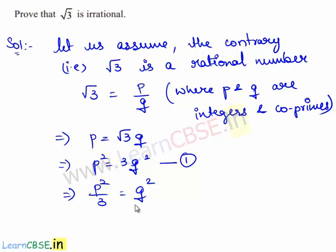From this expression we see that 3 divides p square which also implies that 3 divides p. Therefore, 3 is a factor of p.